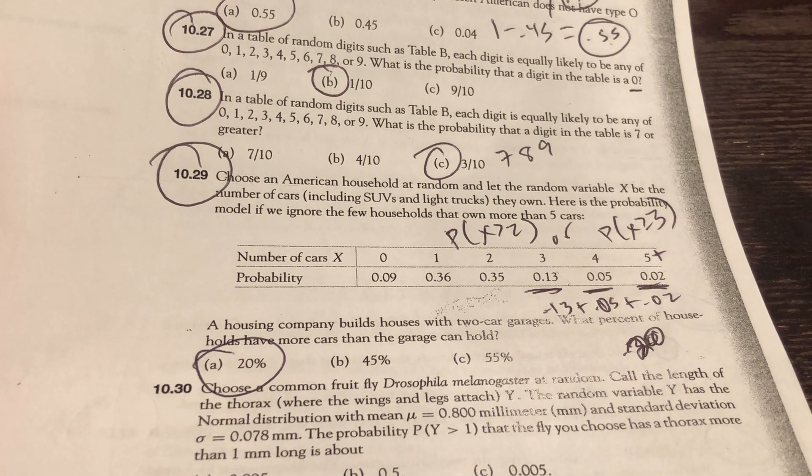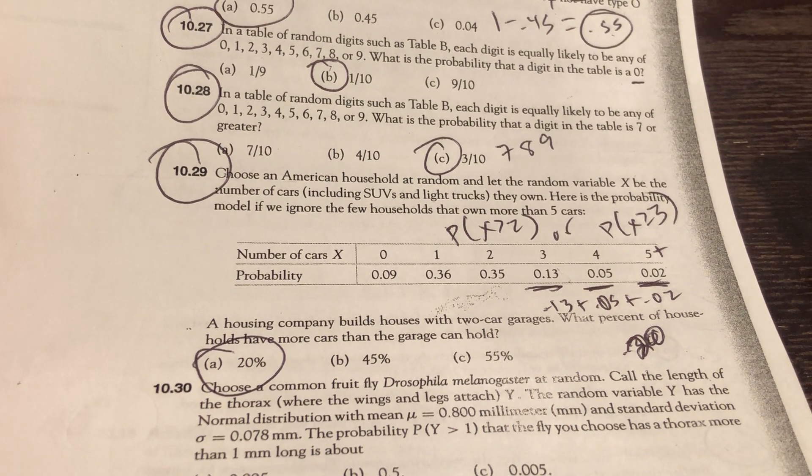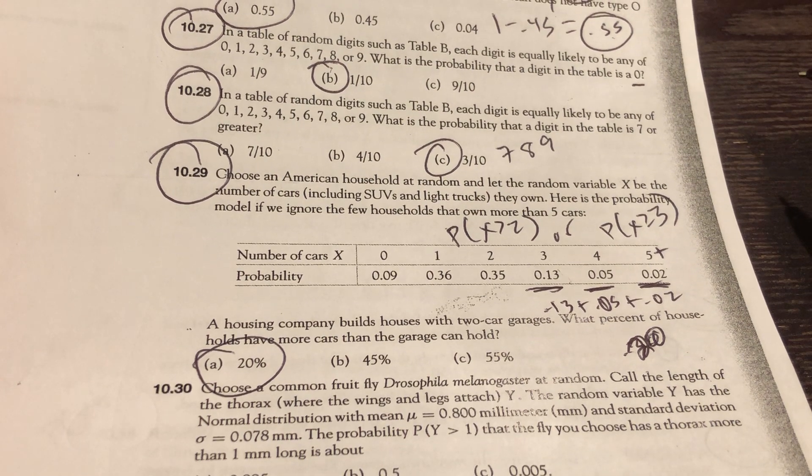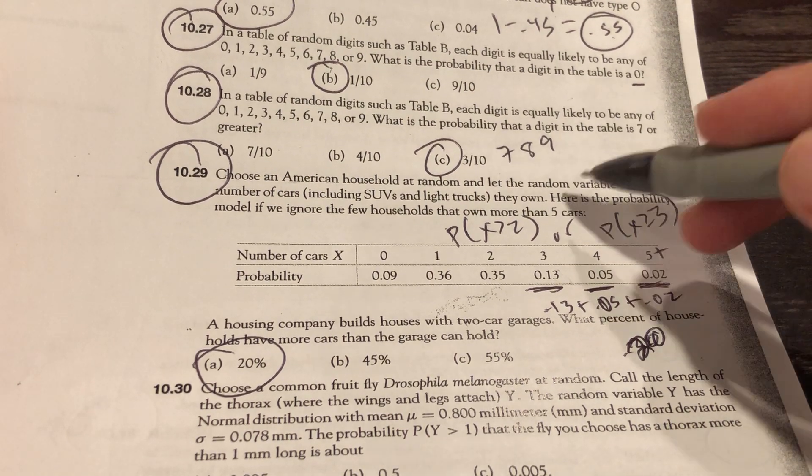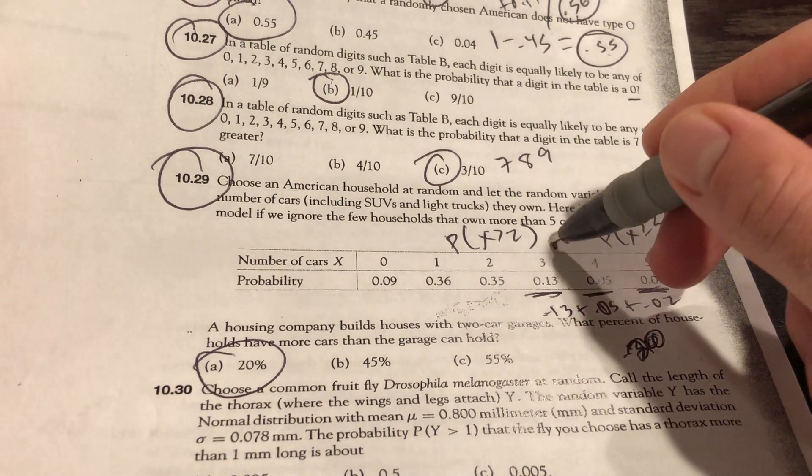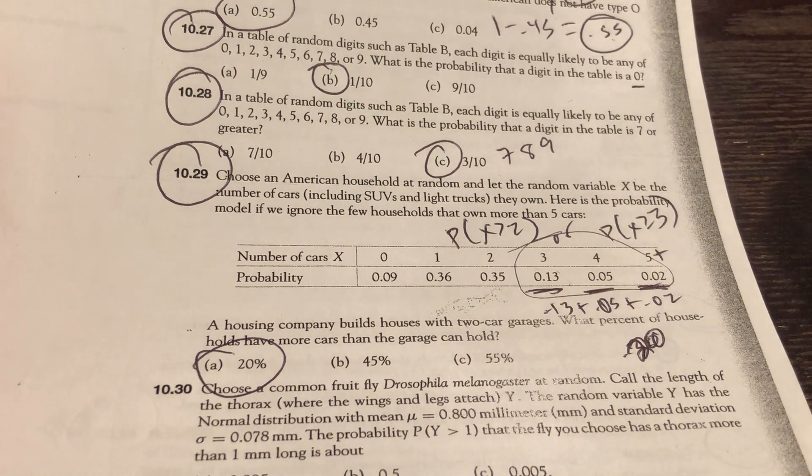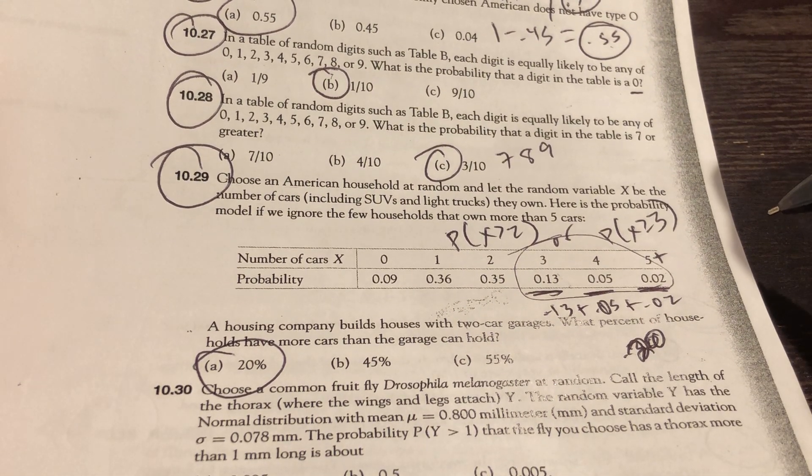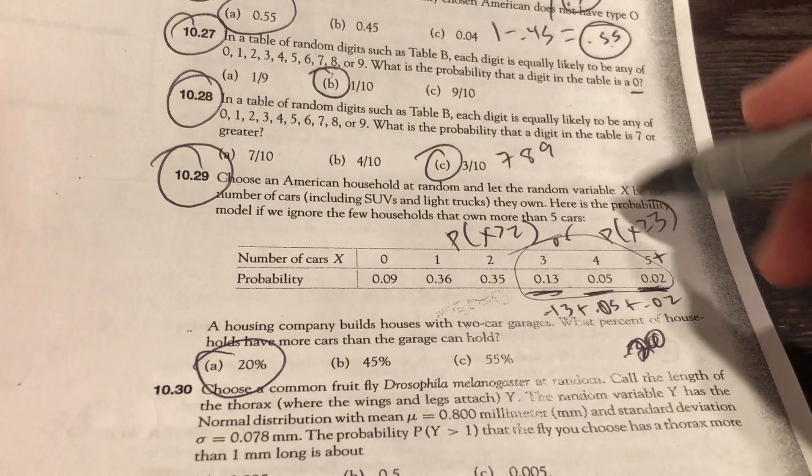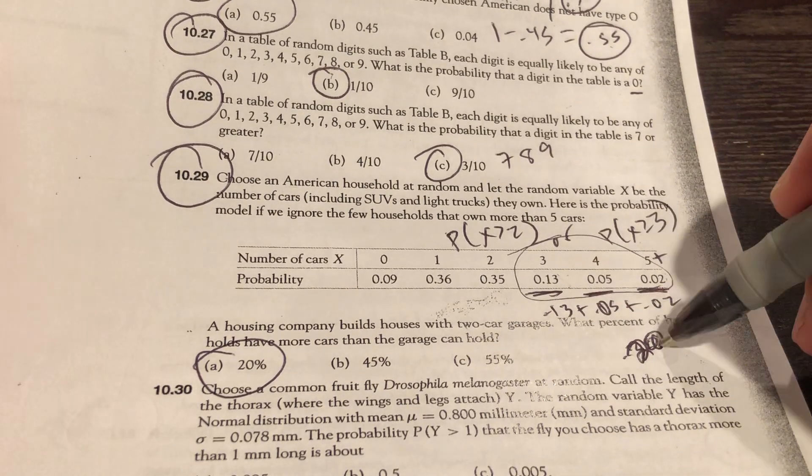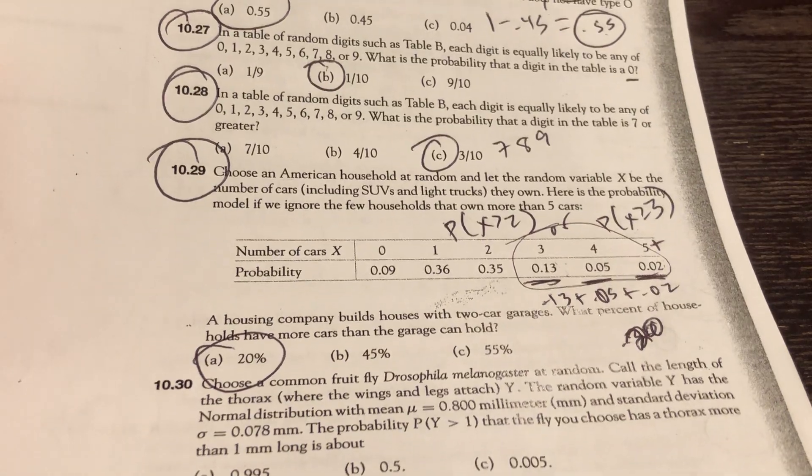Housing company builds houses with two-car garages. What percent of homes can have more cars than the garage can hold? It's the probability that X is greater than 2, which in this case is 3 or more because you can't have 2.1 cars or 2.5 cars. Add up those three numbers. 0.20 is 20%.